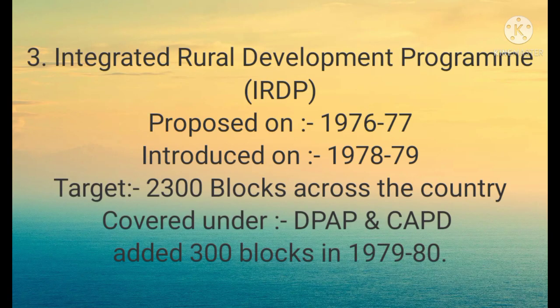Toh isi tarah se jo third scheme thi woh thi Integrated Rural Development Program, jis ko hum IRDP ke naam se jaante hain. Toh is ka first purpose 1976-77 mein central budget mein rakha gaya, aur baad mein kuch modification karne ke baad, isko 1978-79 mein introduce kar diya gaya. Is mein karib karib 2300 blocks ko cover kiya gaya, aur in 2300 blocks ko hum ne command area ke under DPAP - jo Drought Prone Area Program kaha jata hai - ya CADP, Community Area Development Program, in programs ke andar isko rakha gaya, jis ke andar 300 aur blocks add kiye gaye.